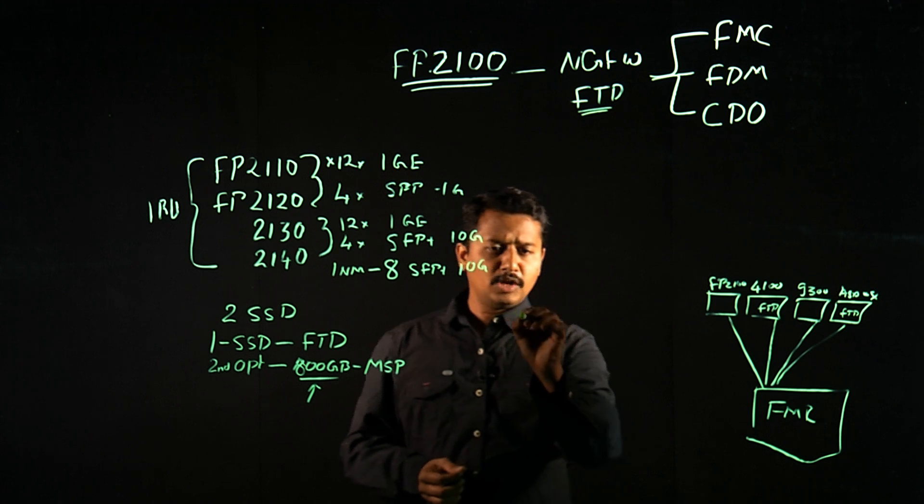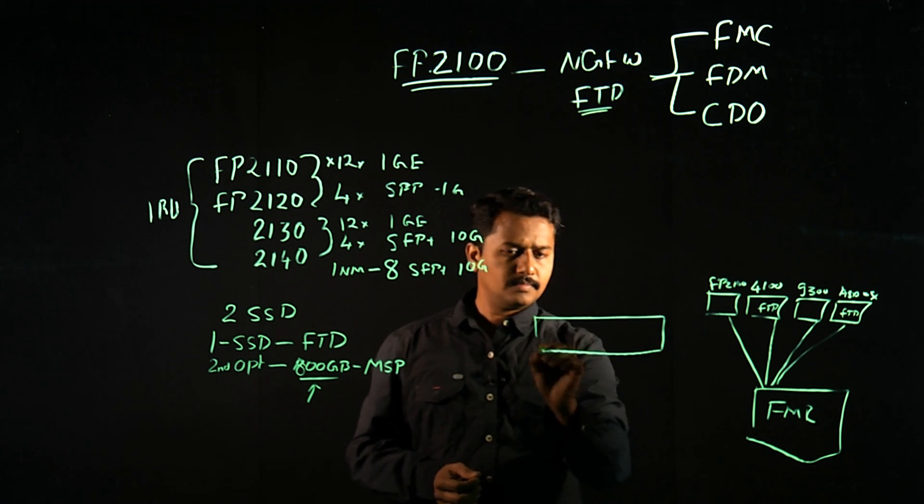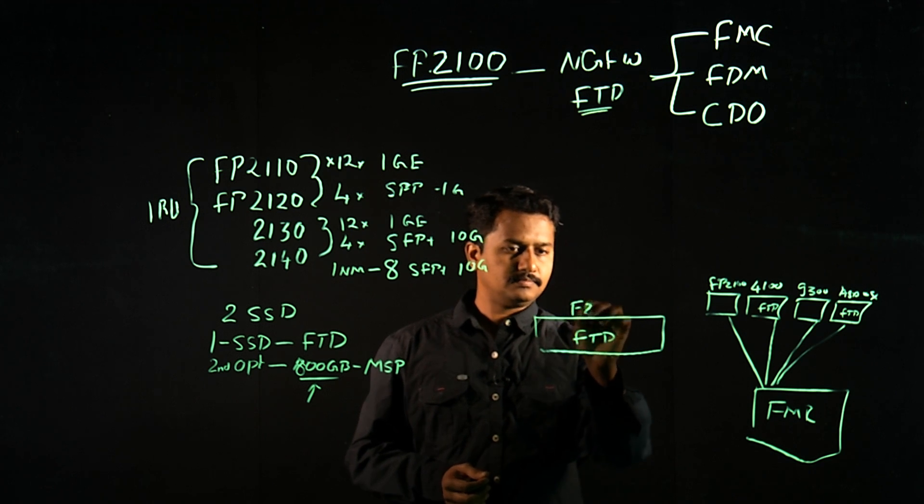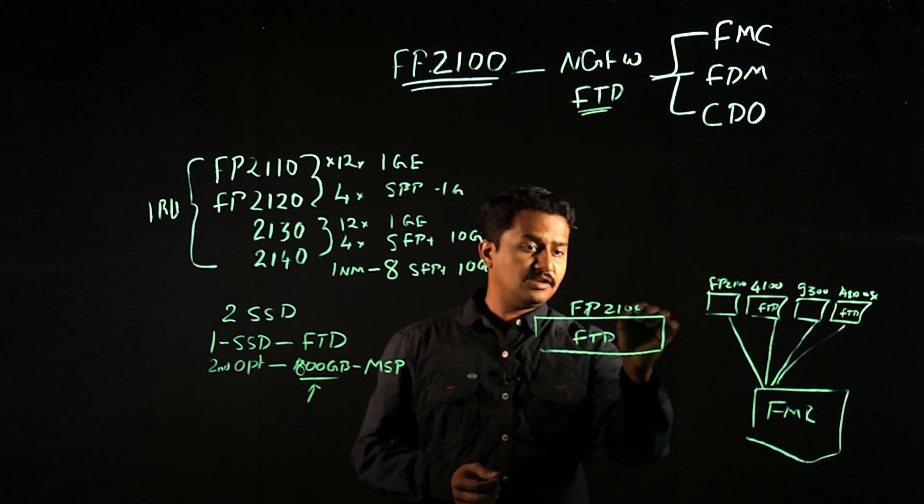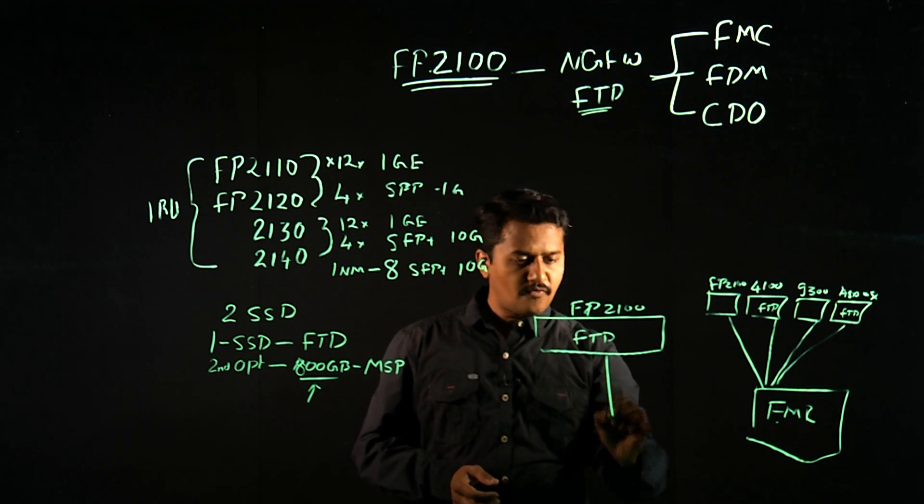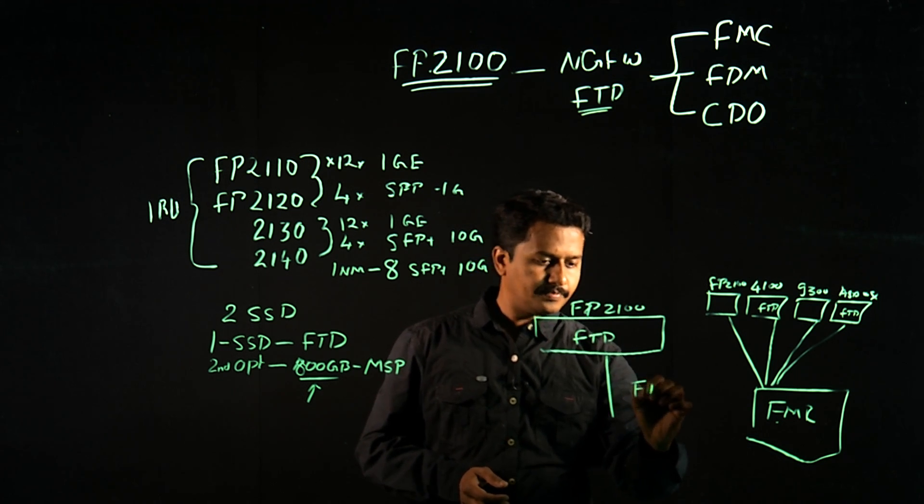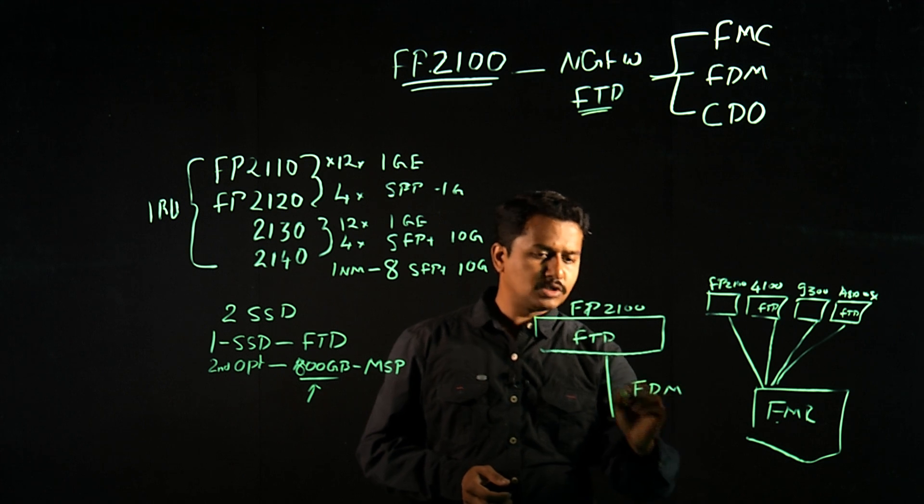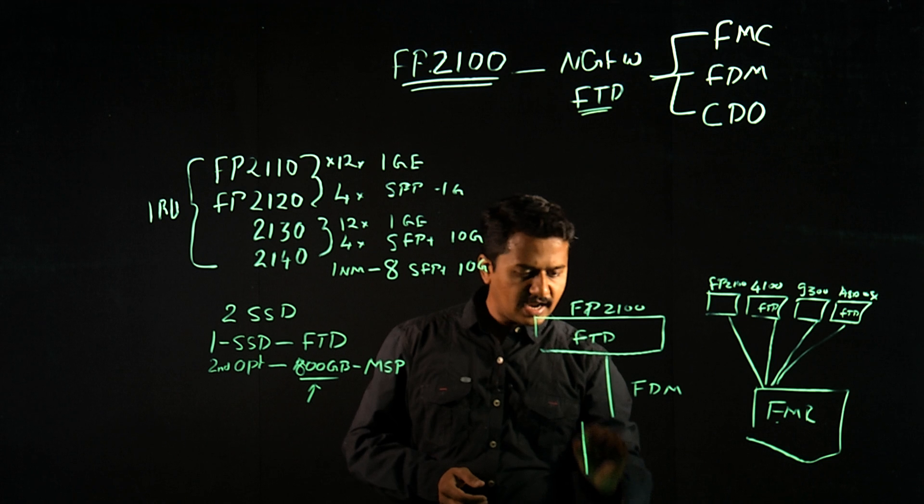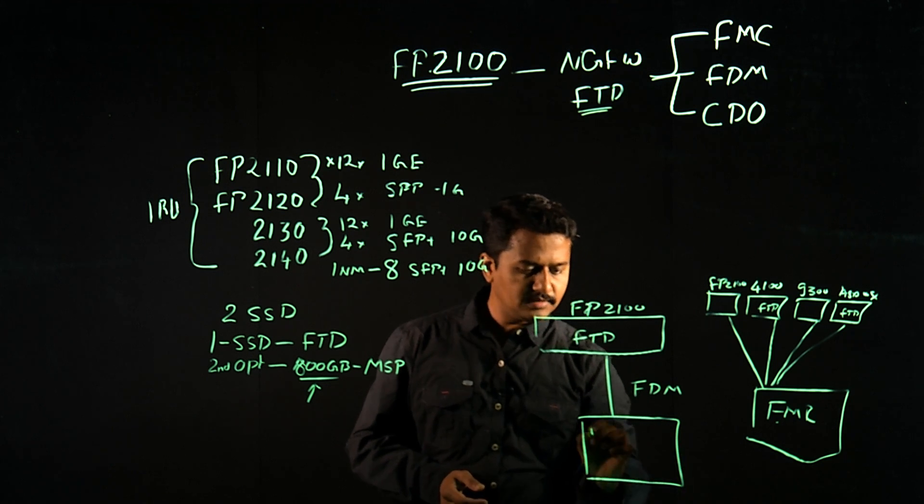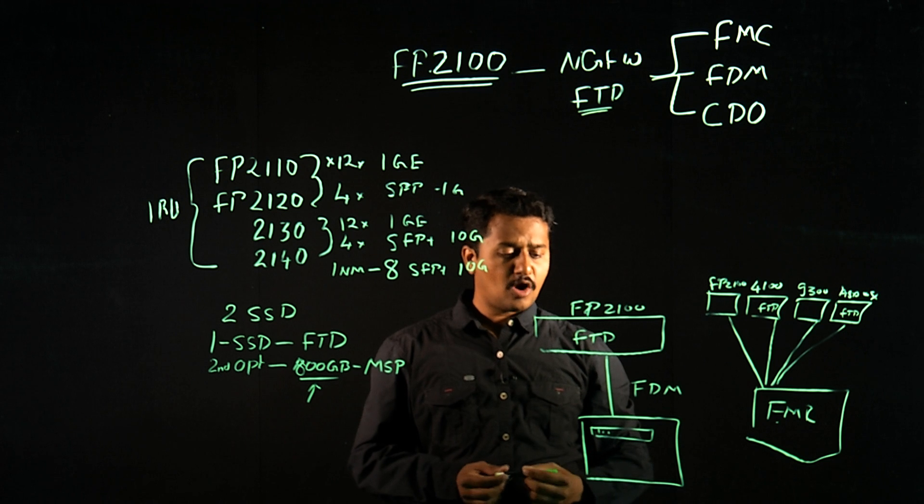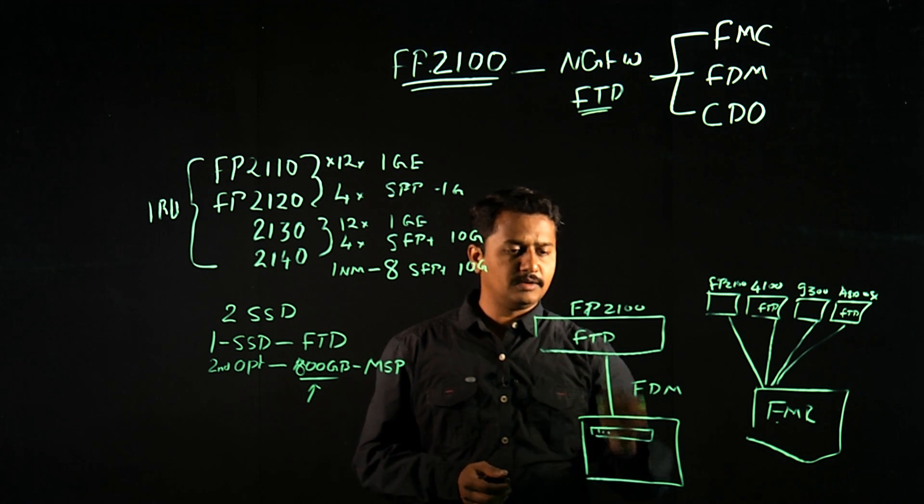If you have only one device in your network, and you don't want FMC to manage this box, you could use Firepower Device Manager, which is an on-box manager, which all you need is a standard browser on your PC to access this Firepower Threat Defense, and then configure the next-gen firewall policy, and then deploy to the FTD.